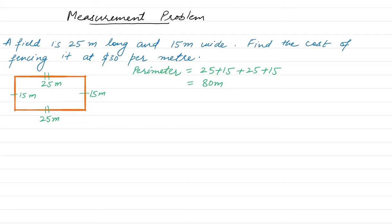To find the cost of fencing, $30 is given to us. What we need to do is just multiply $30 with 80, the perimeter. So 80 times 30 is equal to $2400. So we need $2400 for fencing this rectangular field.